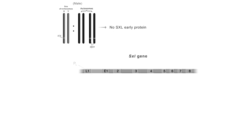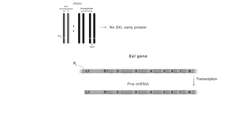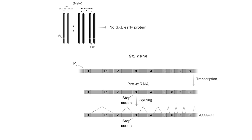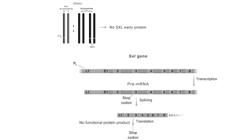In males, the absence of SXL early protein results in the default splicing of the SXL pre-mRNA. As a result, the mature mRNA includes the stop codon in exon 3. Therefore, no functional SXL late protein is produced in males. This event sets the switch to either female or male differentiation, and a cascade of alternative splicing events follows.